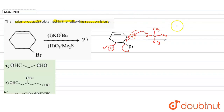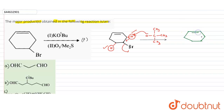A conjugated system forms and a six-membered ring is formed. This is our conjugated system — that is the product of the first step.